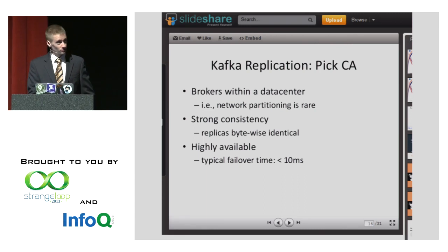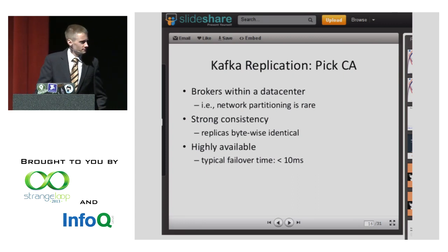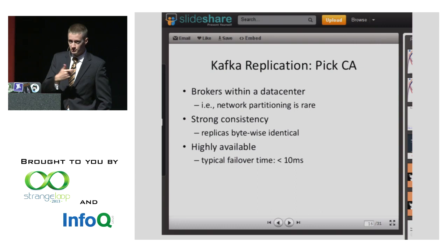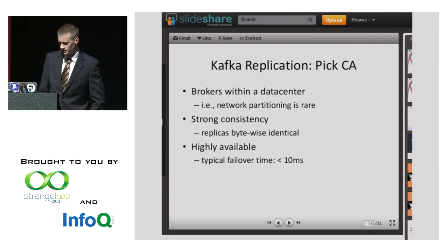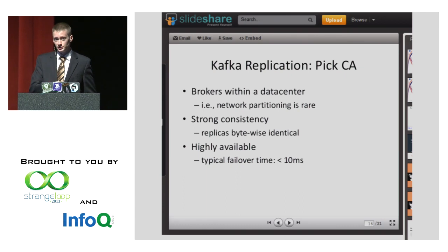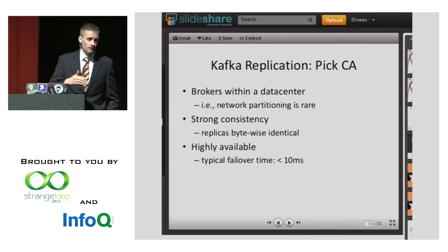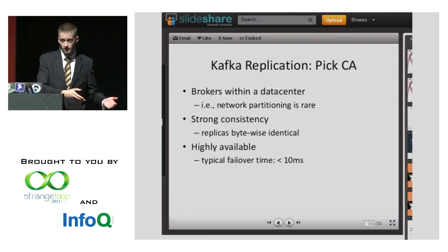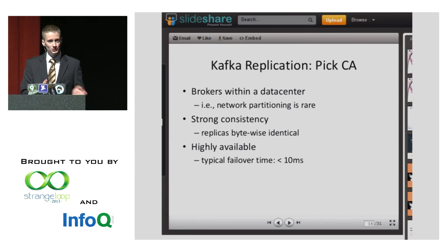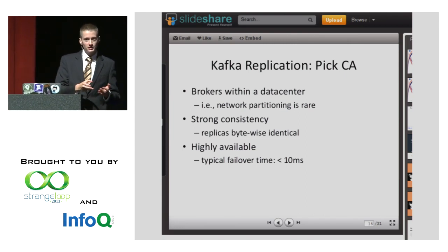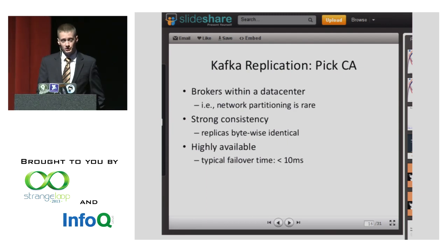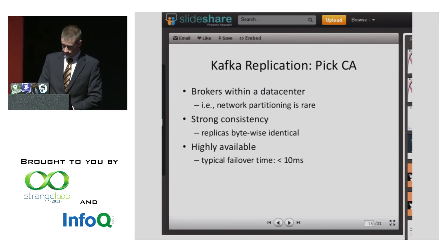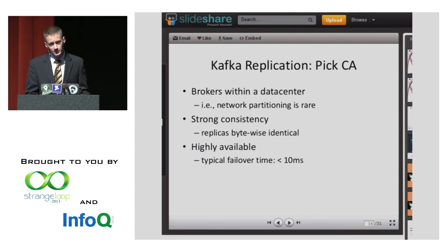You look at the slides and Kafka replication claims to pick CA — consistency and availability. But out of the CAP three, you can have CP or AP but not CA. CA systems only exist if partitions never occur, and this is explicit in the Gilbert and Lynch paper. If a partition does occur — and I've asserted it can — you have to decide which of those two you're going to pick. Any time somebody tells you they've chosen CA, all they've done is said they haven't considered what happens during a partition.